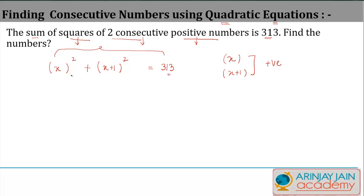x² gives you x². Plus (x+1)² gives you x² plus 1² which is 1, plus 2ab, which is 2 times x times 1, or 2x, equals 313.